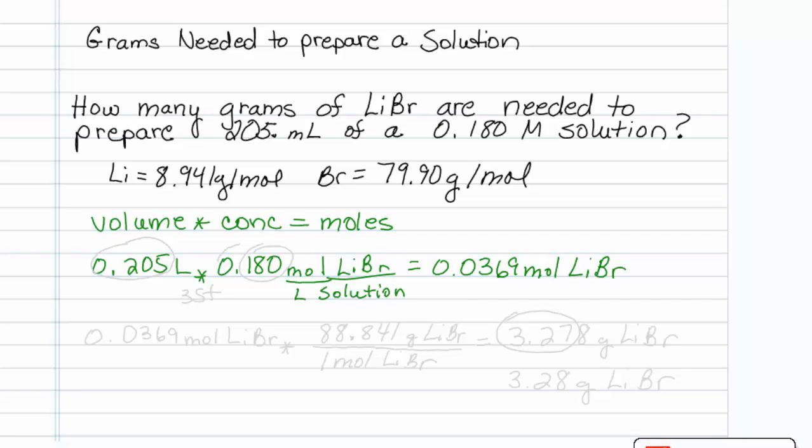All right, well, you know how to get from grams to moles, I'm sure. We take 0.0369 moles of lithium bromide, and we know that one mole of lithium bromide weighs 88.841 grams of lithium bromide, and we multiply that out, and we find out that we need 3.278 grams of lithium bromide.